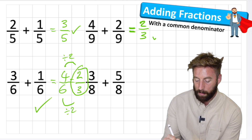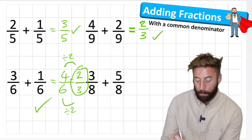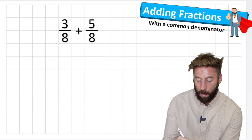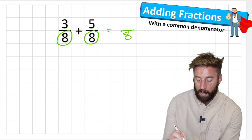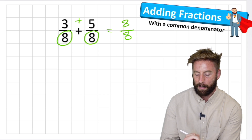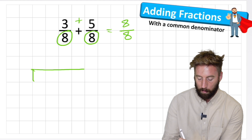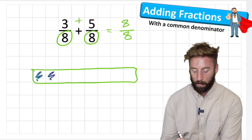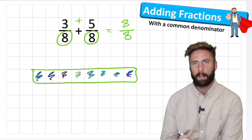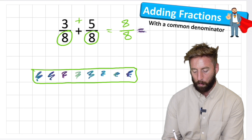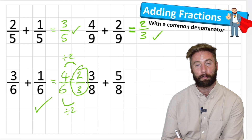The last question is a little bit different: three eighths plus five eighths. Same thing again - I'm working in eighths so my denominator will still be eight. I can just add my two numerators: three add five equals eight - eight eighths. Looking at the bar model: one, two, three, four, five, six, seven, eight - I have the whole thing. So eight eighths equals one or one whole. The answer to three eighths plus five eighths equals one.